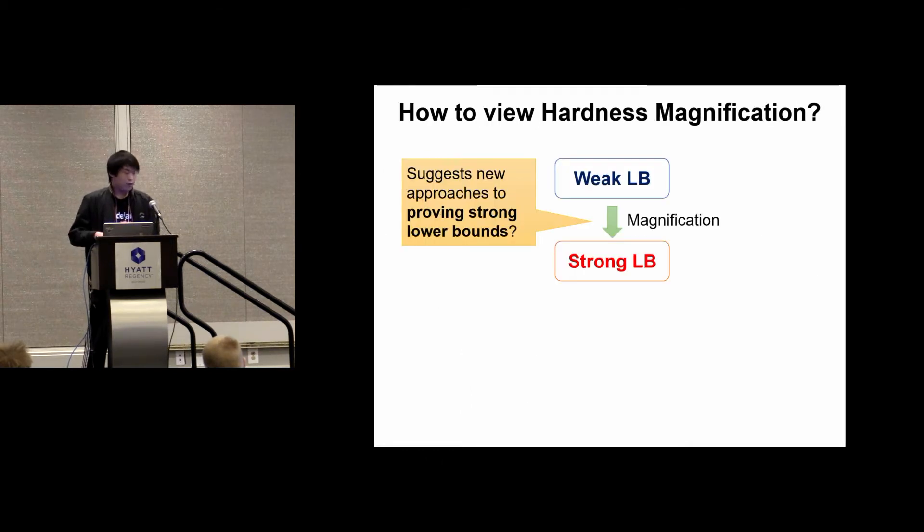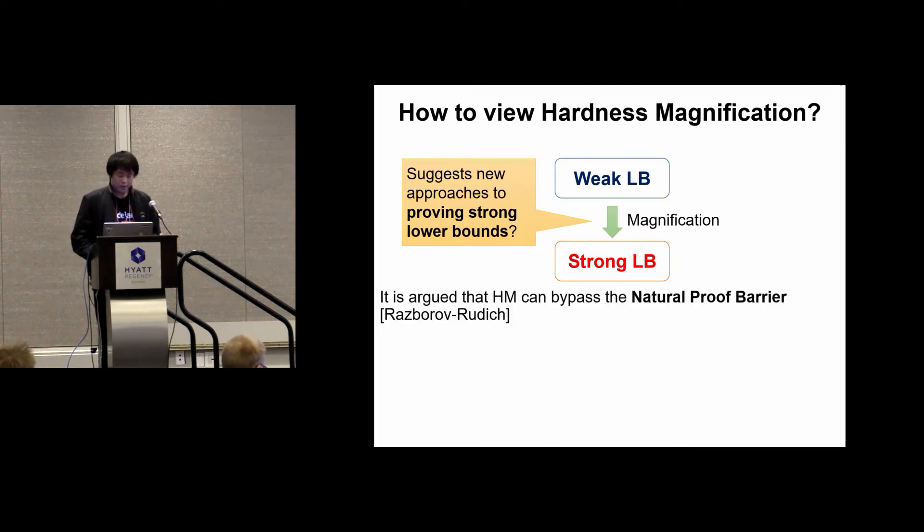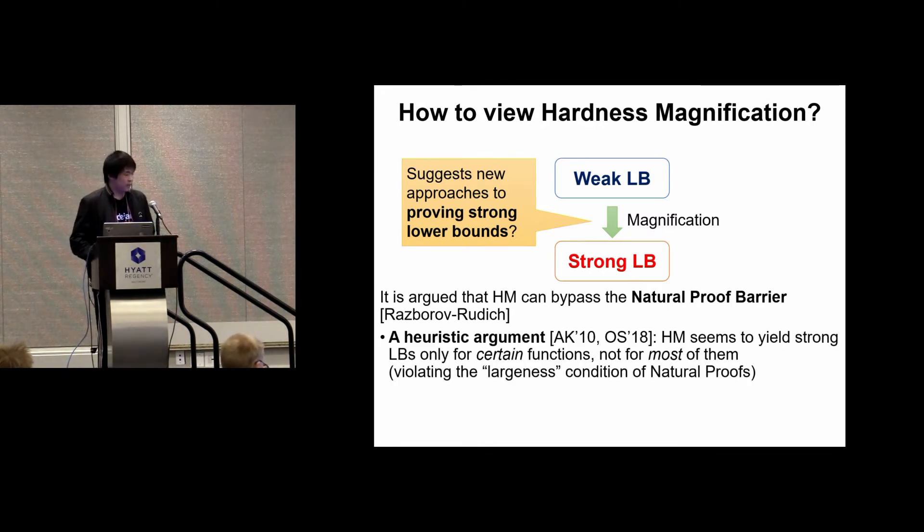There are two different views toward hardness magnification. One believes that hardness magnification provides new approaches to proving strong lower bounds. Razborov and Rudich introduced the natural proof barrier, which says that if we want to prove a lower bound against a very strong circuit class, then the proof has to be non-natural. It is argued that hardness magnification can bypass the natural proof barrier.